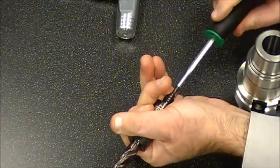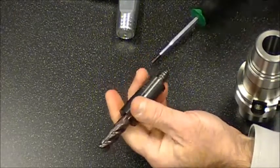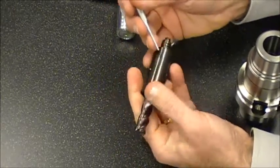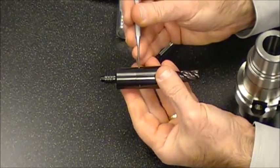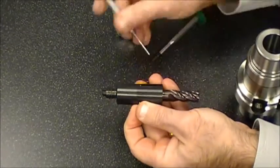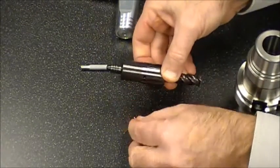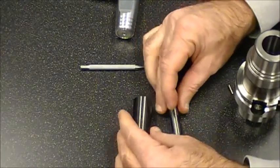Now we can take our punch and insert it in the cross hole and push our dowel pin out. The dowel pin comes out and the mill comes out, and we're ready to put a new end mill in.